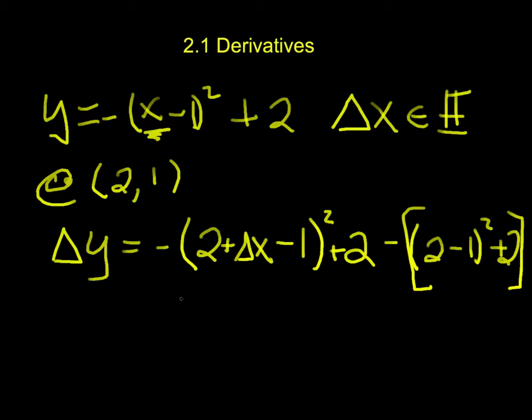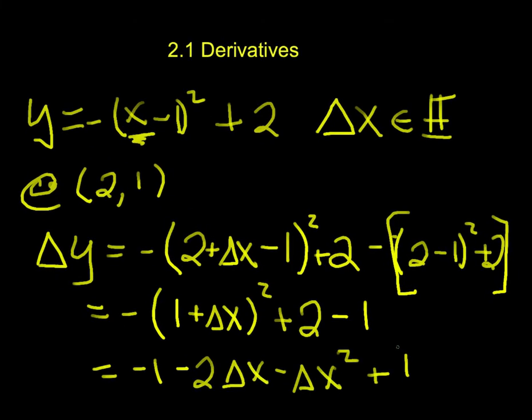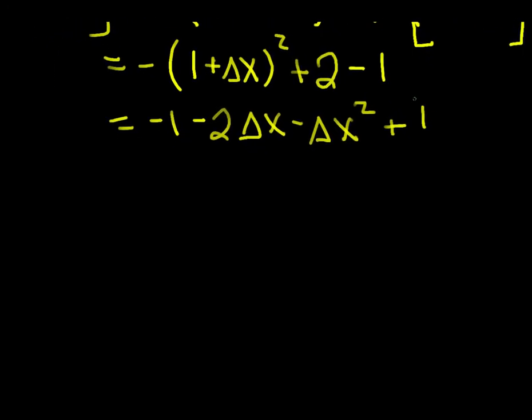So working this out algebraically, we see that this is equal to negative (1 plus delta x) quantity squared plus 2. And then here we have 2 minus 1, which is 1. There's a negative in front of there, so that's 1 squared minus 1, so that becomes minus 1. And then expand this out, we get negative 1 minus 2 delta x minus delta x squared. And we can simplify here, 2 minus 1 is 1. And now, continue to work out the algebra, the 1's cancel out, and what we get left behind is simply negative 2 delta x minus delta x squared.